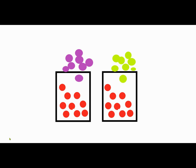Let's look at this diagram to get an idea of what the particles are doing. In the example on the left, the purple will not dissolve into the red.